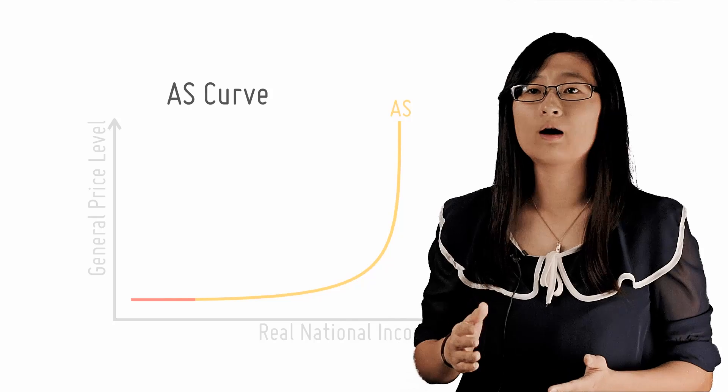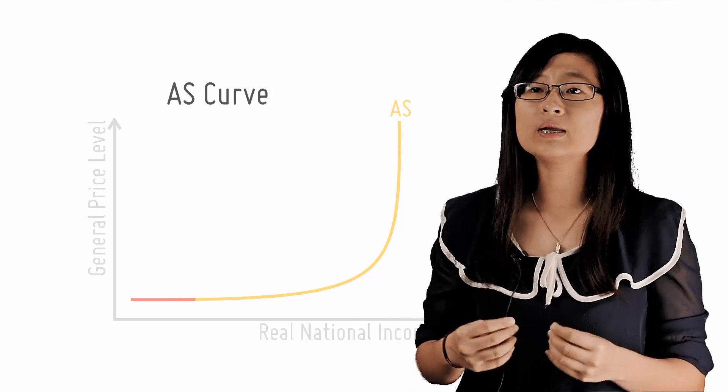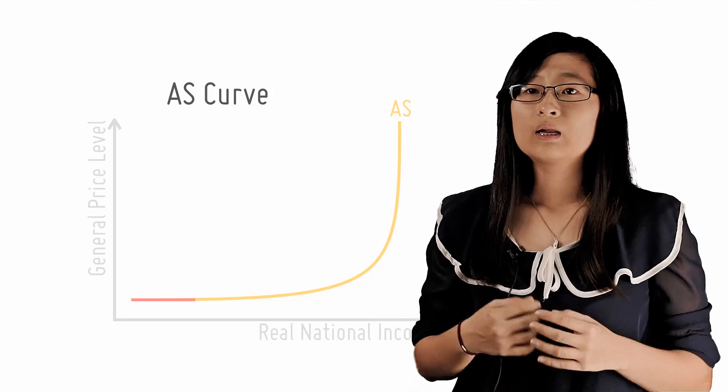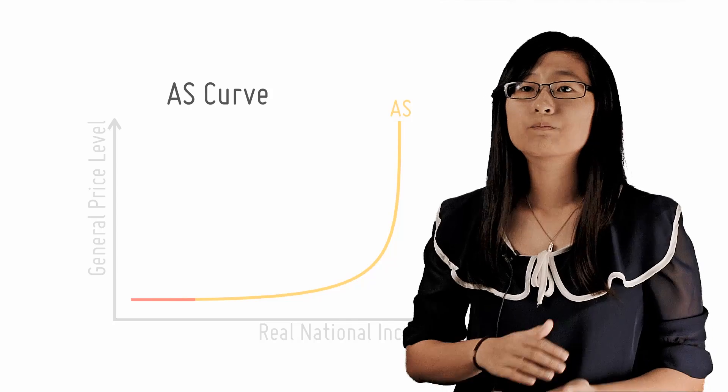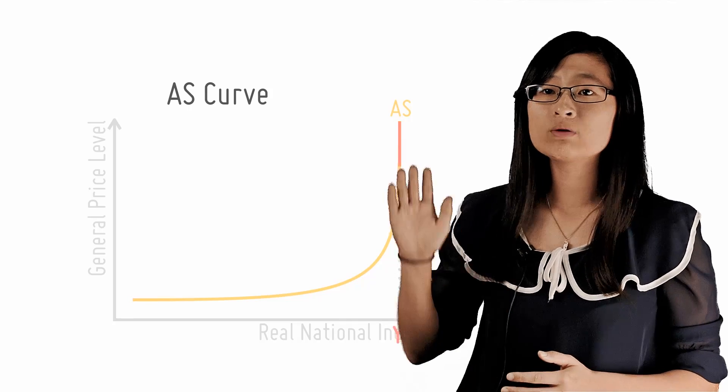Should there be a rise in AD, national output can easily increase without any increase in the general price level. In other words, the AS curve is perfectly elastic over this range.